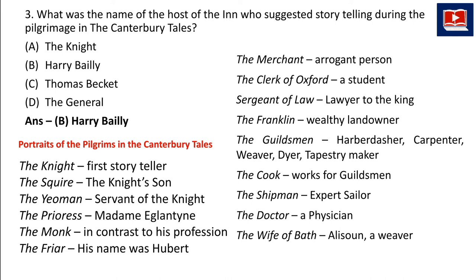Other characters include: the Merchant, who was an arrogant person; the Clerk of Oxford, a student; the Sergeant of Law, lawyer to the king; the Franklin, a wealthy landowner. Five different Guildsmen were there — a Haberdasher, Carpenter, Weaver, Dyer, and Tapestry Maker. A Cook working for these guildsmen was also present, and a Shipman who was an expert sailor.